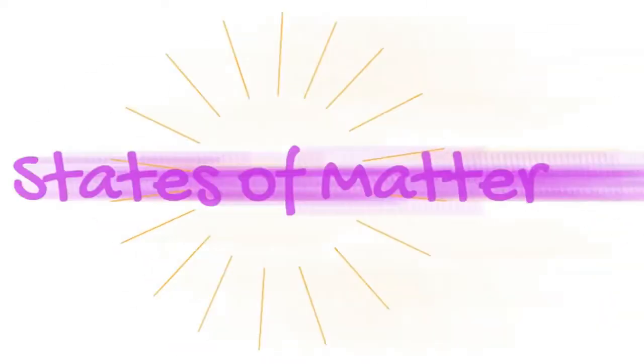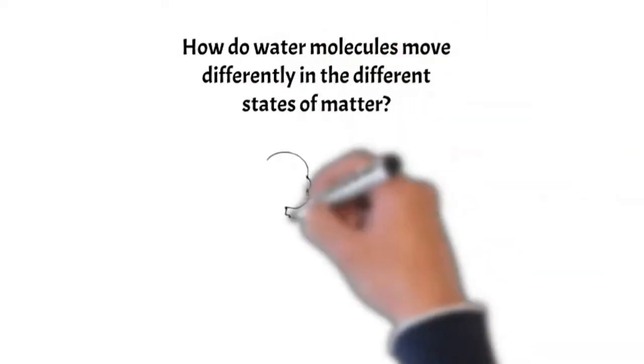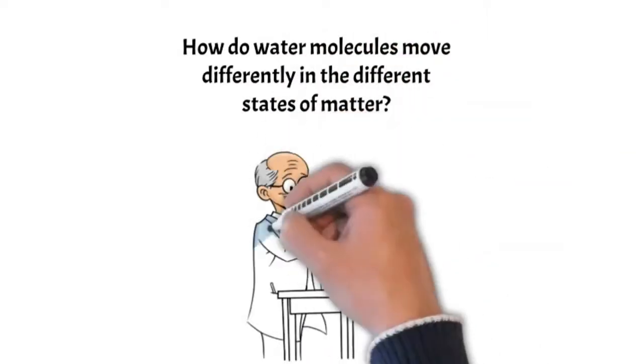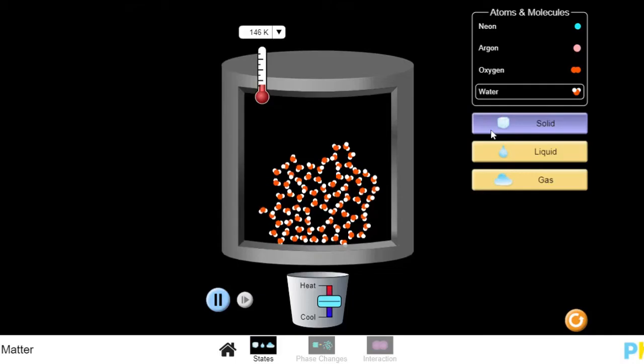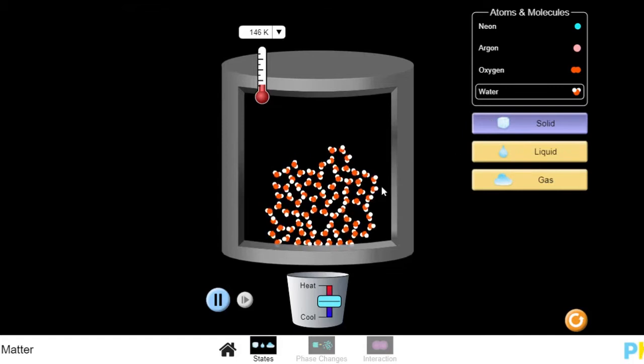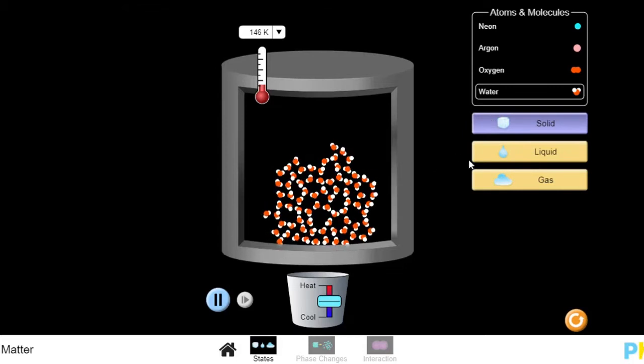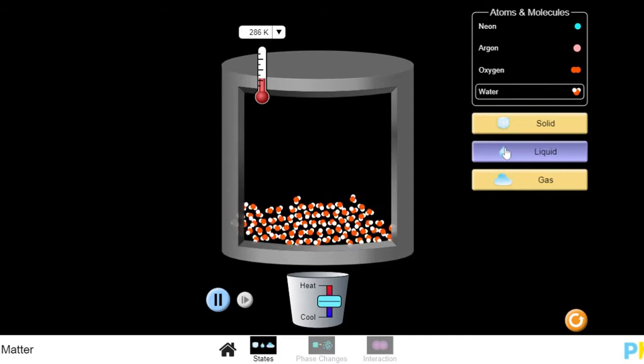States of matter: how do water molecules move differently in different states of matter? As a solid, they are tightly packed together and barely moving. As a liquid, they are still together but moving more. As a gas, they are spread apart and moving a lot more.